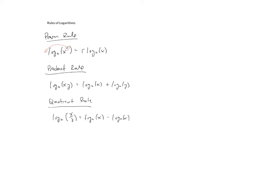So hopefully the names make sense: the power rule, because you have a power that you're bringing down; the product rule, because you have log of a product; and the quotient rule, because you have log of a quotient. Now we're going to actually prove a couple of these. As we prove them, I hope that you see the connections between not only the logarithm properties, but really what a logarithm is.